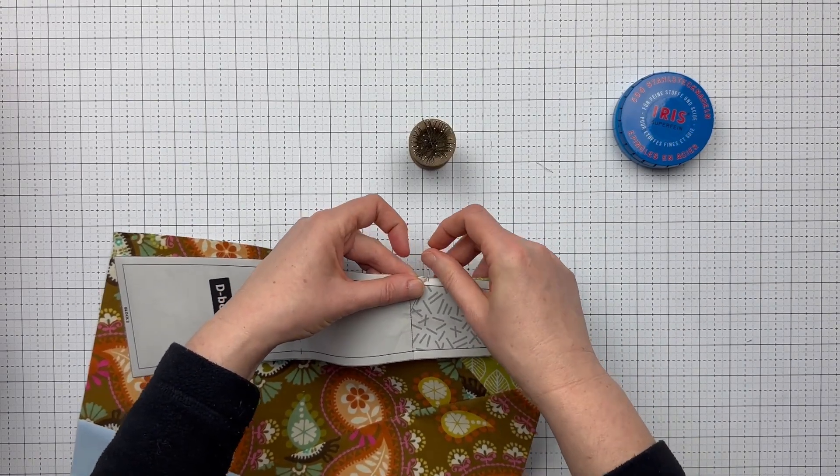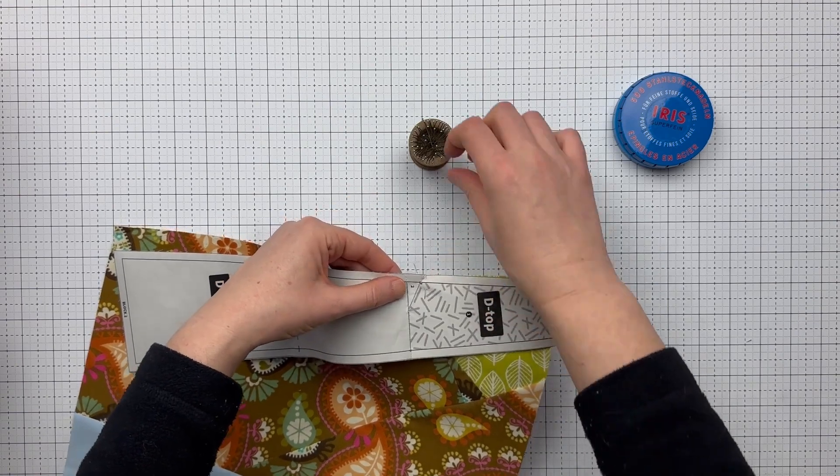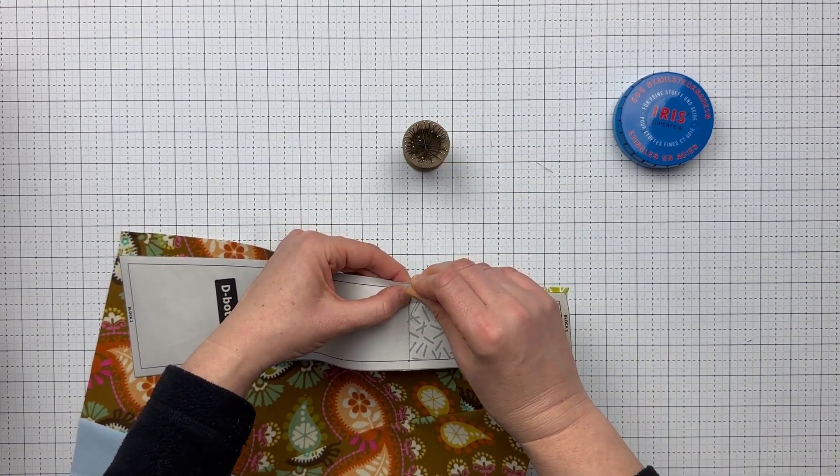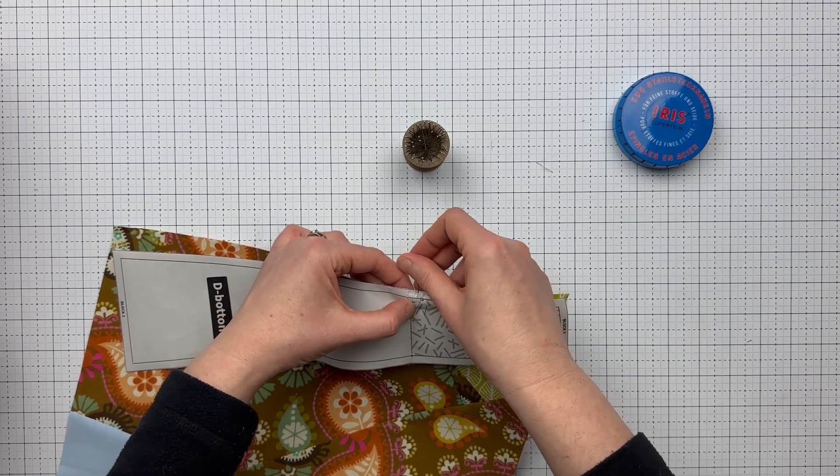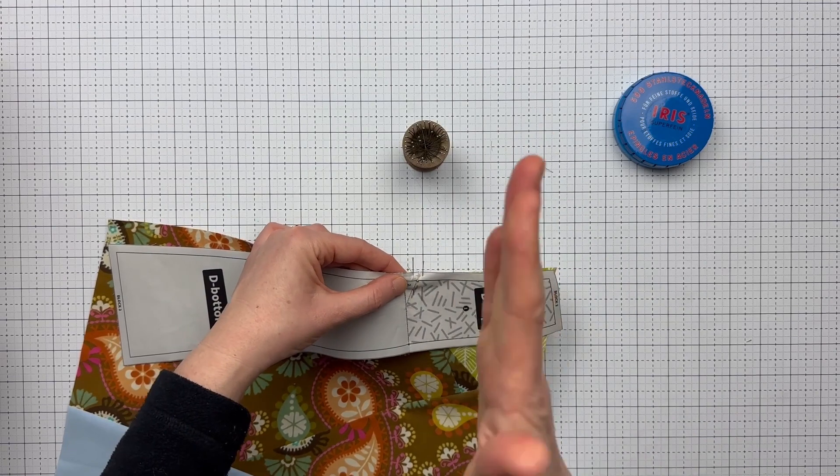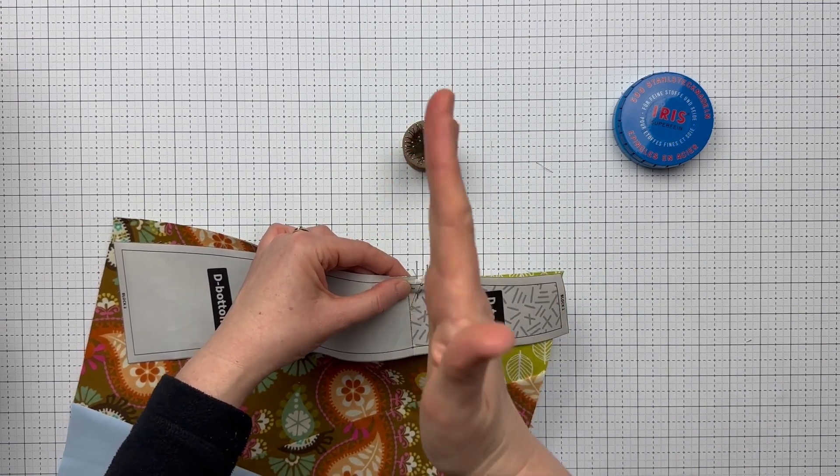So I'm going to pin on the right hand side of that, and then the left hand side. And I find by doing two pins, it's less likely to shift and the alignment will be nice. These two seams will be nice and aligned.